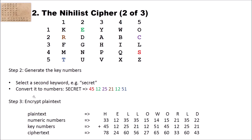In the third step, you encrypt your plain text. Let's assume your plain text is 'hello world'. First, convert it to numeric values using the Polybius square — 'hello world' becomes 33, 12, 35, 35, and so on. Then you write the key numbers below this, repeating 'secret' (45, 12, 25, 21, 12, 51) as needed until the end. You compute the ciphertext by adding the numbers: 33 plus 45 is 78, 12 plus 12 is 24, 35 plus 25 is 60, and so on.